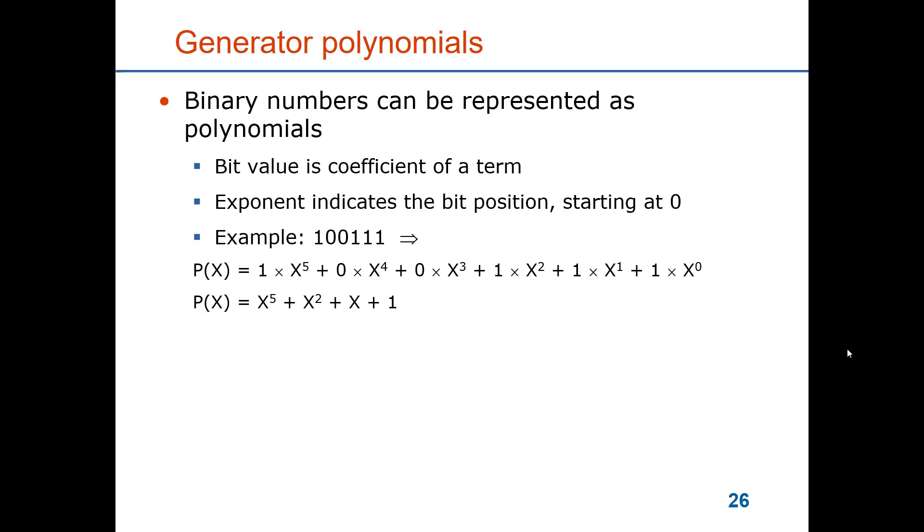So if we for instance take a generator 100111 then we can write that starting from the right as a coefficient one because that least significant bit is one and the position is the zero position so the term is x to the power of zero. Then we go one step to the left, we have again a coefficient of one because that bit value is one and the position is one, so we have the term x to the power of one. One step to the left coefficient one, the term is x to the power of two. Moving to the left again we have coefficient zero and the term is x to the power of three. Then we have coefficient zero again for the term x to the power of four. And finally we have a coefficient of one for the term x to the power of five.